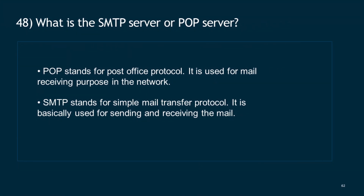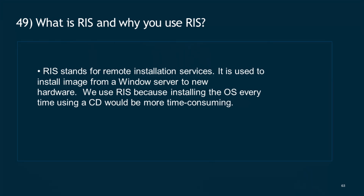Question 48: What is the SMTP server or POP server? POP stands for Post Office Protocol and is used for mail receiving purposes in the network. SMTP stands for Simple Mail Transfer Protocol and is basically used for sending and receiving mail. Question 49: What is RIS and why is it used? RIS stands for Remote Installation Services. It is used to install an image from a Windows server to new hardware. We use RIS because installing the OS every time using a CD would be more time-consuming.